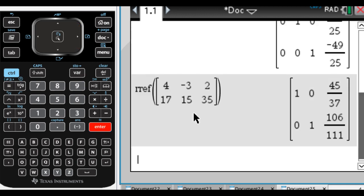So I'm going to press enter. And it's telling me that x value, the x value is 45 over 37. And the y value is 106 over 111. And that's it. Okay, so I hope you found this helpful, and good luck.